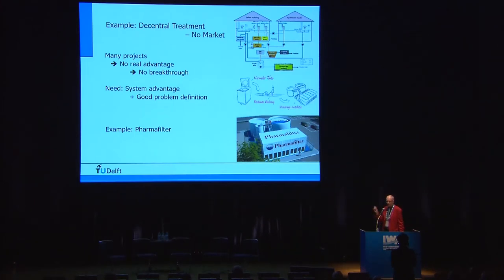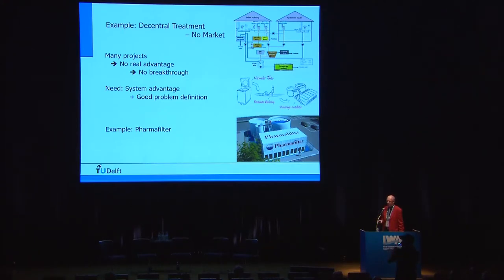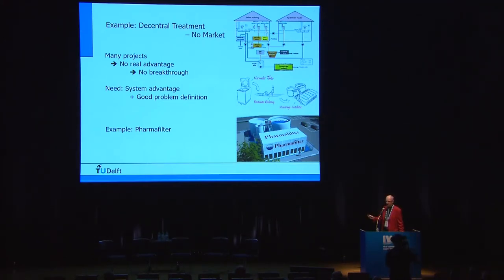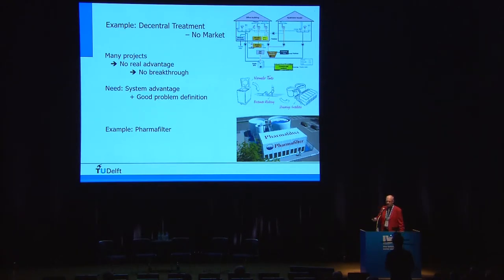For decentralized systems, for instance, this has been going on already for decades with no real advantage — they are more expensive than existing systems in Europe and often more complicated. A very good example is called the PharmaFilter, a decentralized system for hospital wastewater treatment. This system was not developed to treat hospital wastewater per se; it was developed because hospitals wanted to improve their overall internal logistics, which required including a wastewater plant. So it came out of another benefit inside the hospital, combined with treatment, which captures medical and other compounds, and that combination generated the innovation.